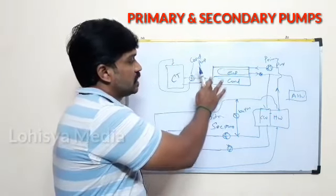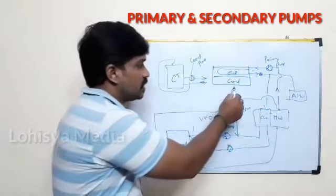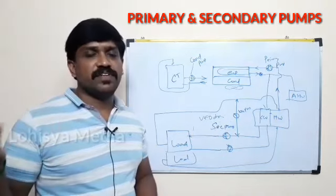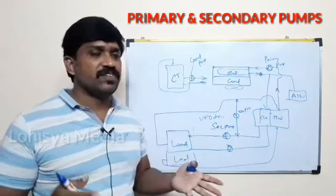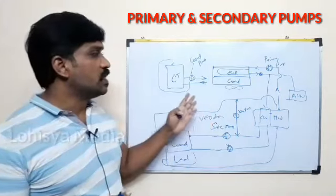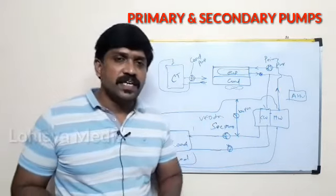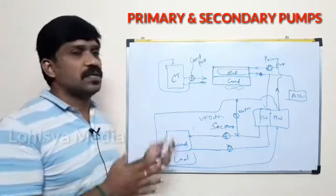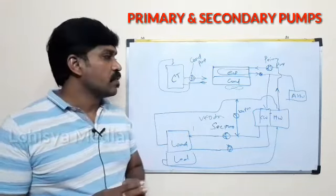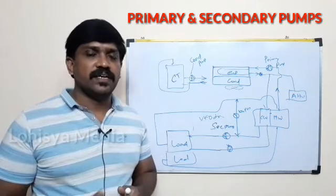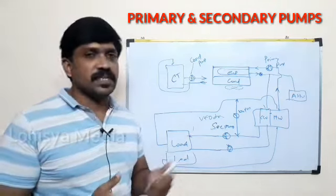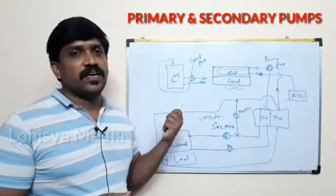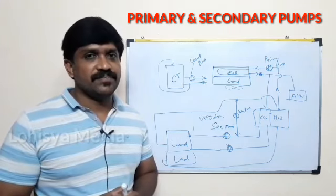In the case of air-cooled chillers, you cool the condenser using a cooling fan instead of a cooling tower. So this is the primary water system and secondary water system in the chilled water system. If you want to understand this concept better, please comment. Subscribe to our channel, please like and share. Thank you.